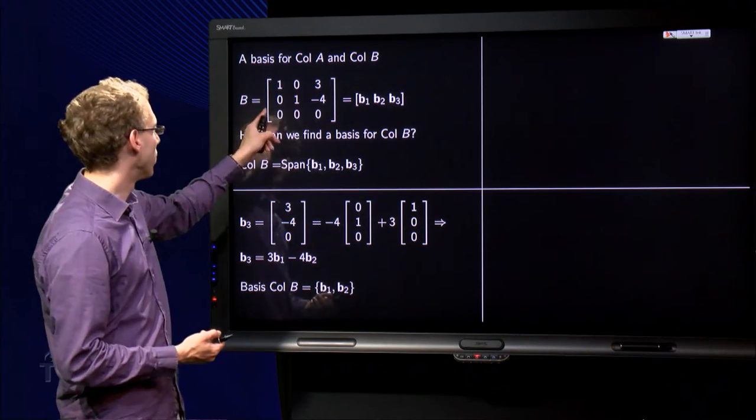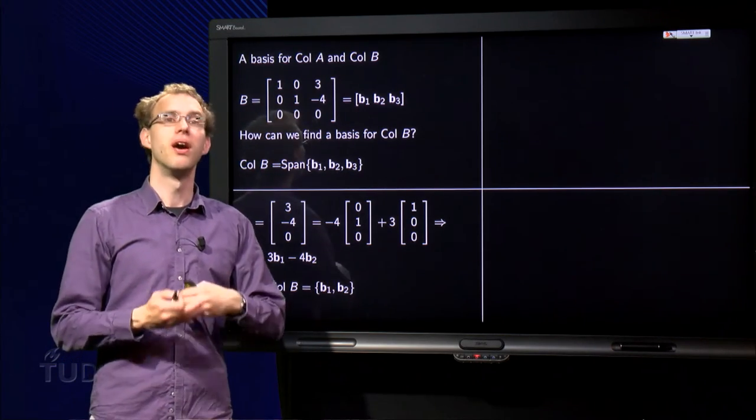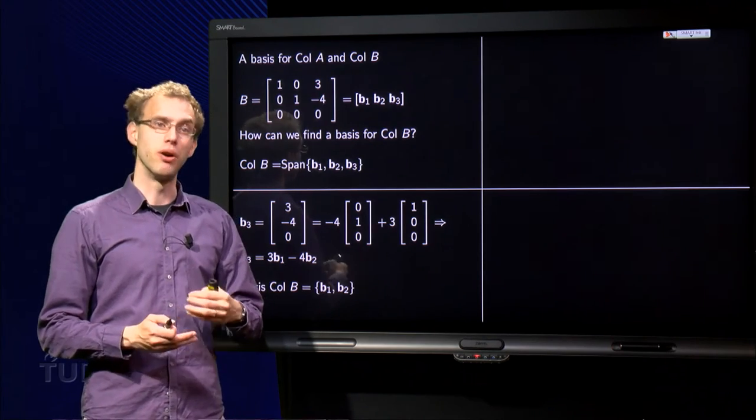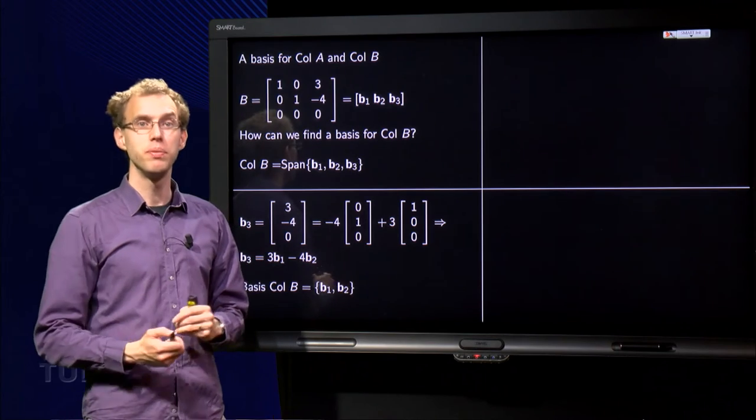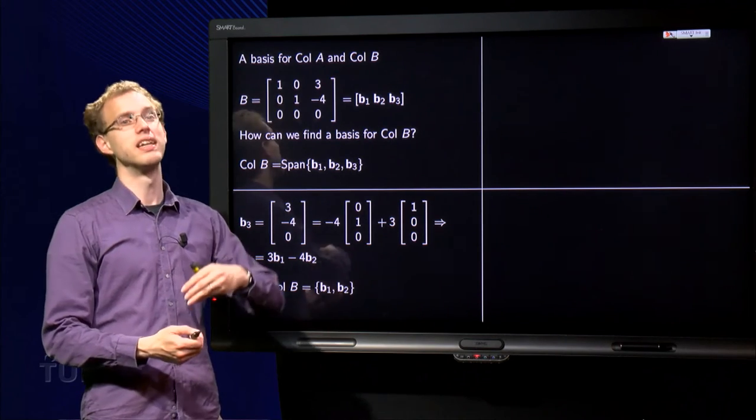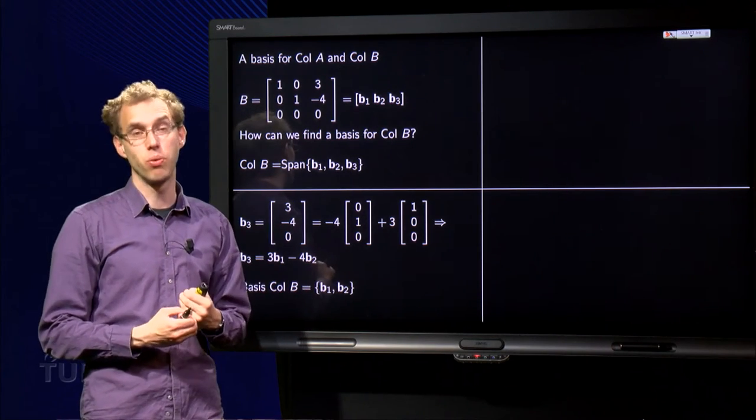b₁ and b₂ on the other hand, [1, 0, 0] and [0, 1, 0], are independent. So a basis for col B would be the set consisting of b₁ and b₂ because it is independent and spans col B.